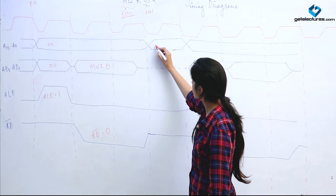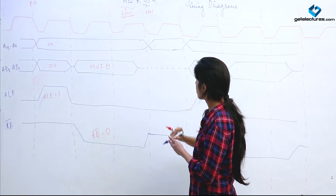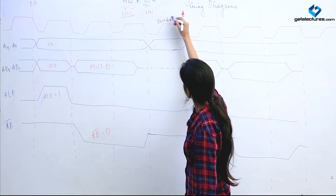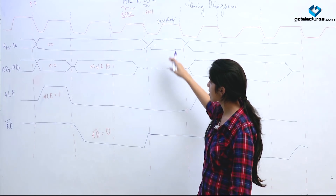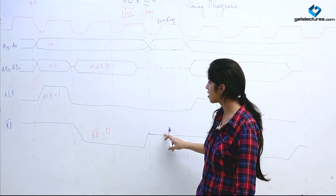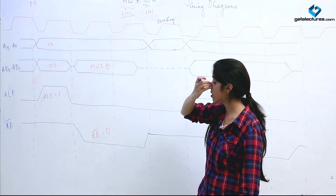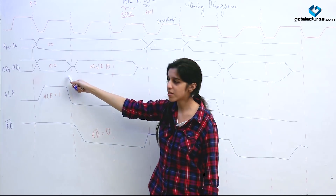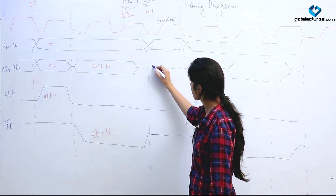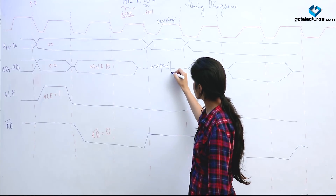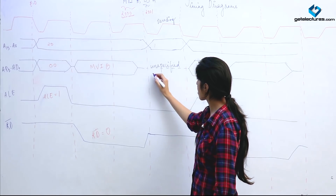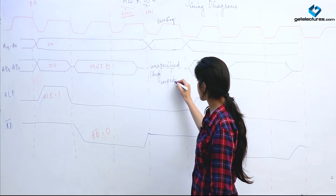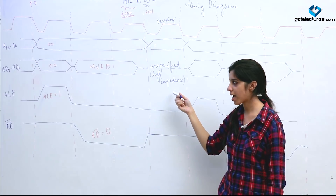The next clock cycle is the decoding cycle — one clock cycle is required for decoding the instruction, where the processor interprets what instruction has been given. During this cycle, the address bus and multiplexed bus are unspecified and set to high impedance, since we do not require the bus in this clock cycle.